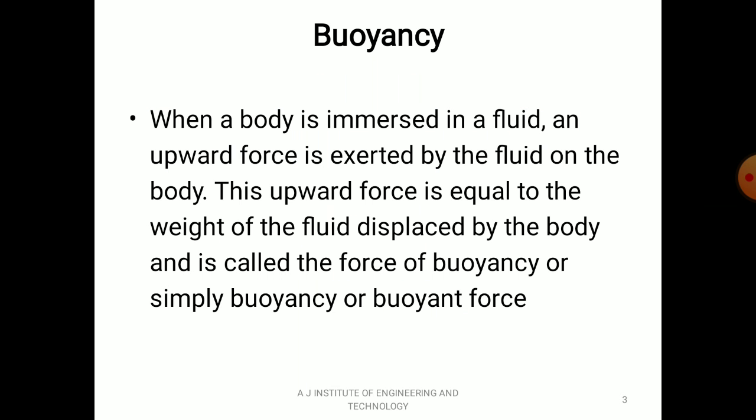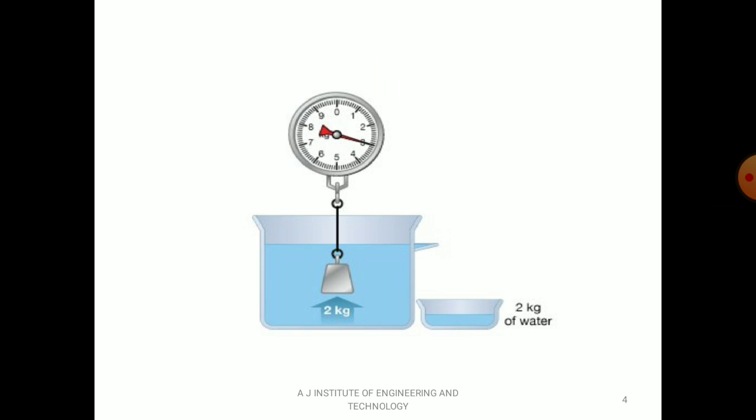So first let's go for the definition of Buoyancy. Just have a look at this diagram. There is a mass of 2 kg that is immersed in a liquid, say water. Because of the immersion of 2 kg of mass, there is displacement of 2 kg of water. This principle is called Archimedes principle — the principle of flotation or principle of Buoyancy.